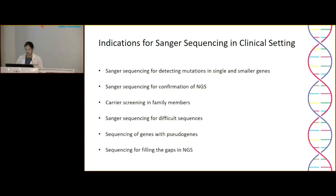Sanger sequencing is very important for genes that have pseudogenes, which are difficult to analyze by NGS. It is also used for filling gaps that you don't get in next-generation sequencing.